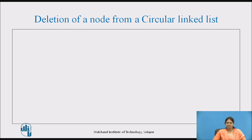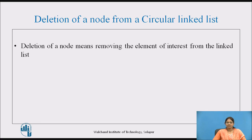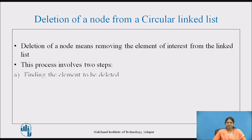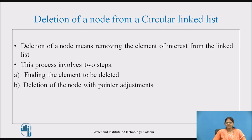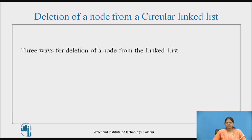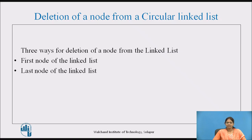Deletion of a node means removing the element of interest from the linked list. This process involves two steps: first, find the element to be deleted, and second, deletion of the node with pointer adjustment. This type of deletion is called logical deletion. There are three ways for deletion of a node from the linked list: the first node, the last node, and at any given position in the linked list.